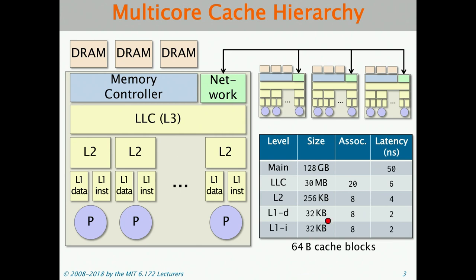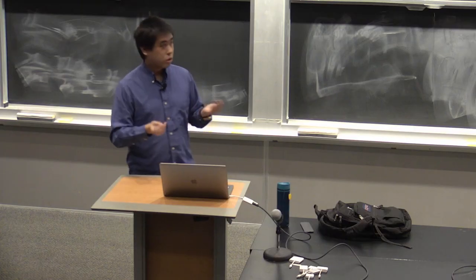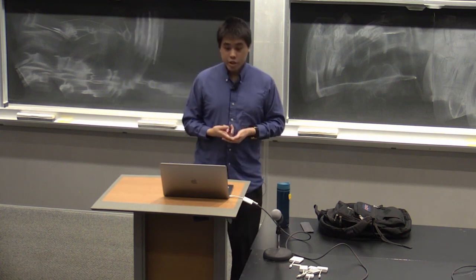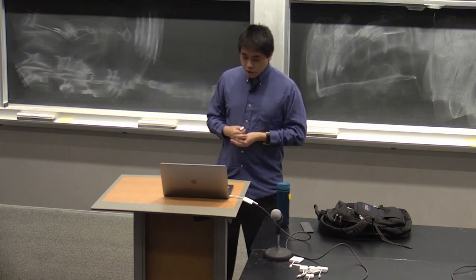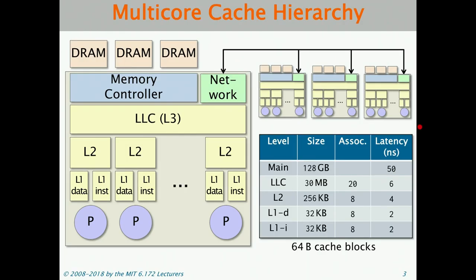Associativity tends to go up as you move up the cache hierarchy, and I'll talk more about that shortly. The time to access memory also tends to go up — latency increases as you move up the hierarchy. L1 caches are the quickest, about 2 nanoseconds. L2 cache is a little slower, say 4 nanoseconds. Last level cache, maybe 6 nanoseconds. And then going to DRAM is about an order of magnitude slower, around 50 nanoseconds. The faster memories use more expensive materials, so we can't fit as much on the machine — that's why faster memories are smaller.